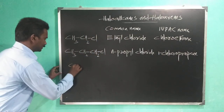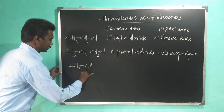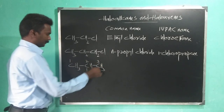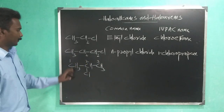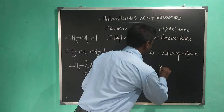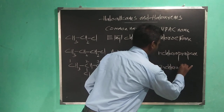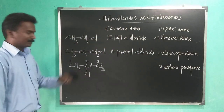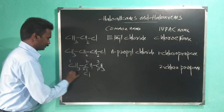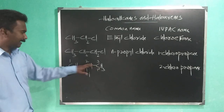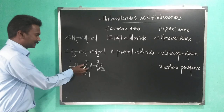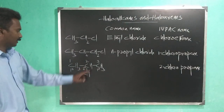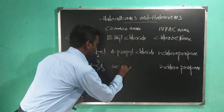Same number of carbon atoms but different structure: CH3-CHCl-CH3. The IUPAC name is 2-chloropropane. The chlorine atom is connected with the secondary carbon atom — this center carbon is bonded with two other carbon atoms. So the common name is secondary propyl chloride or isopropyl chloride.